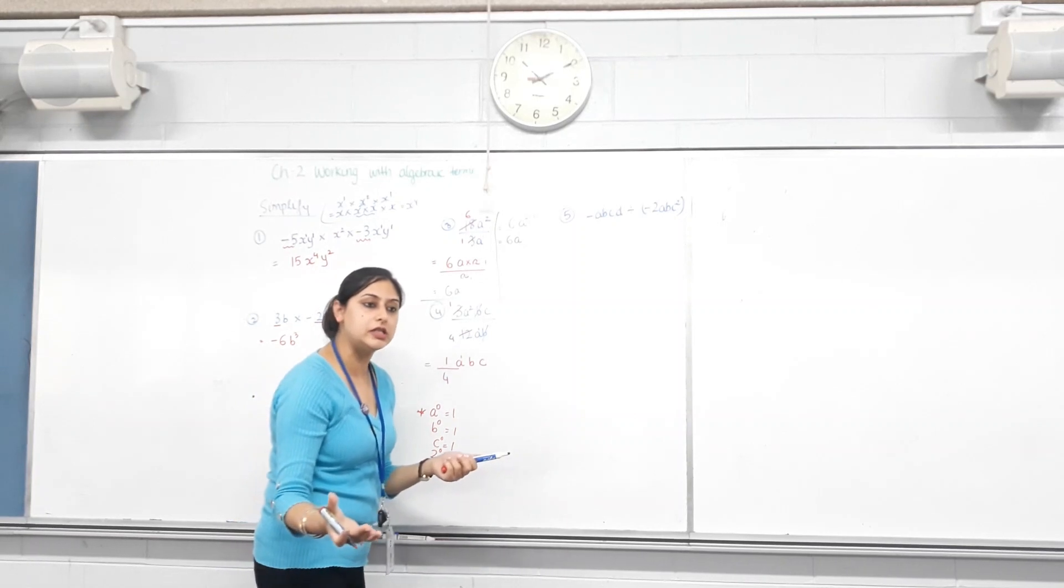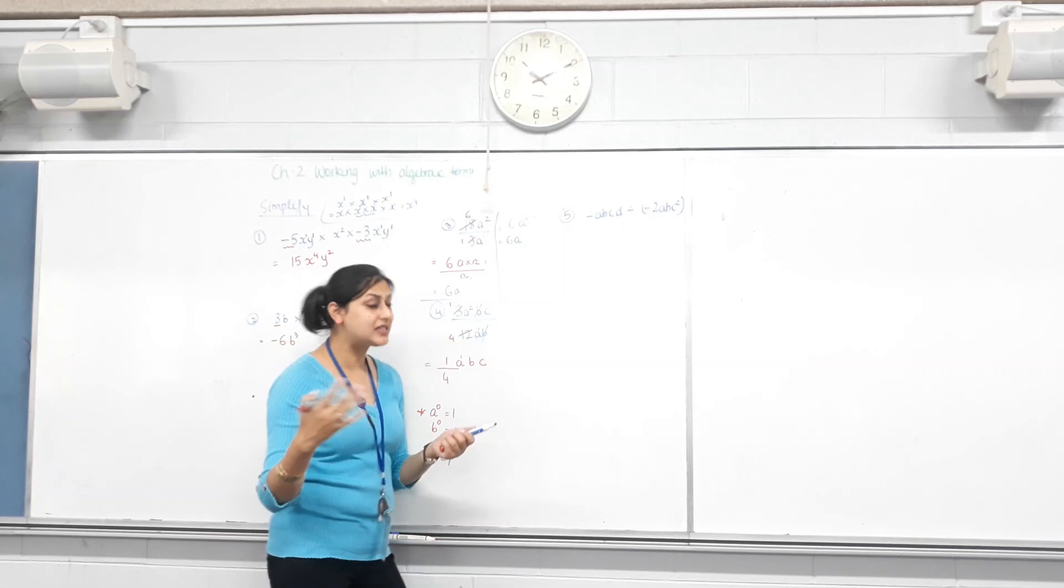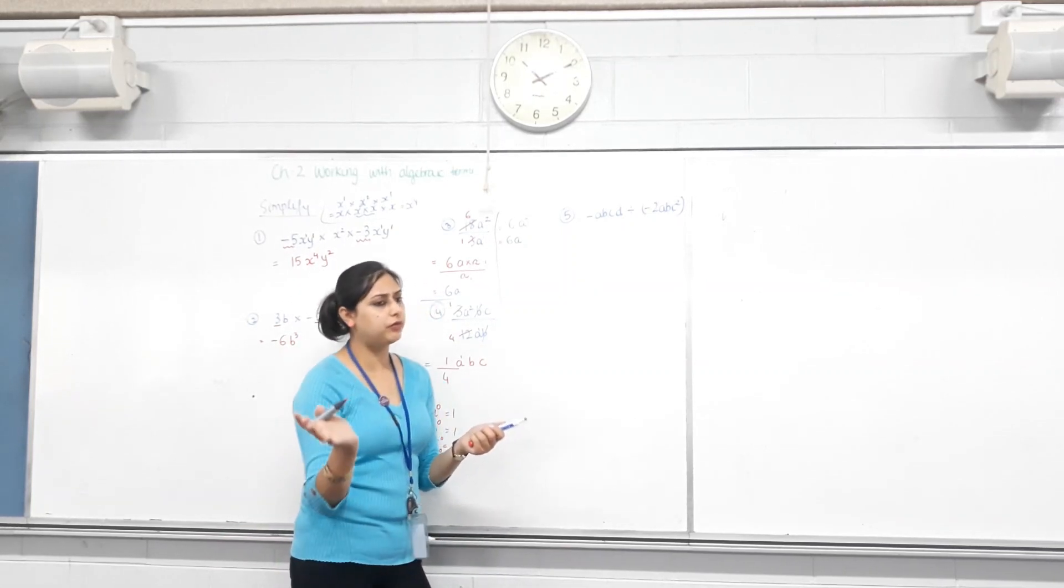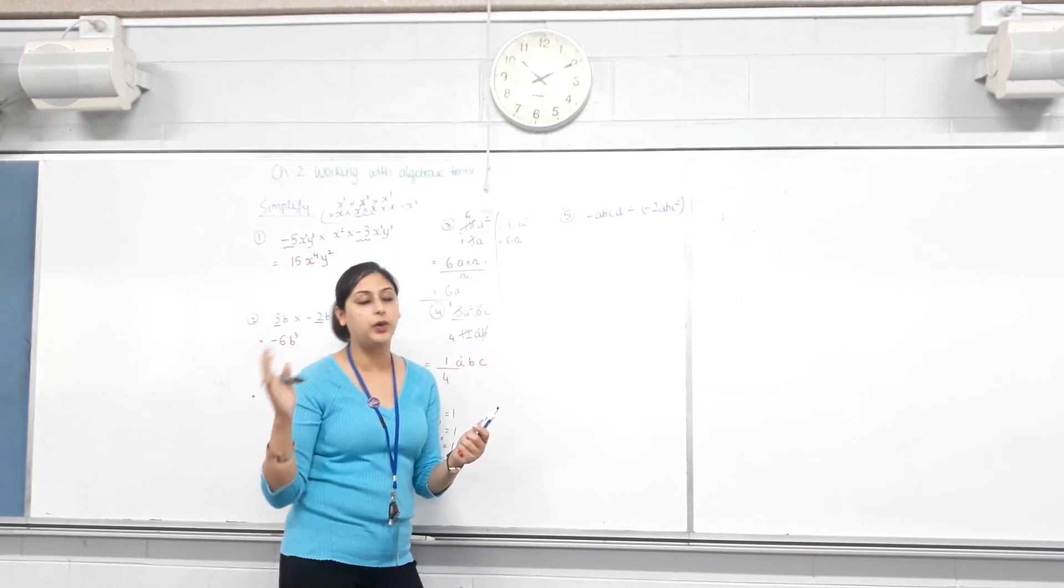Anything to the power of 0 is 1. B to the power of 0 is 1, C to the power of 0 is 1, 2 to the power of 0 is 1, 10 to the power of 0 is 1. It doesn't matter what it is. Anything to the power of 0 is 1.